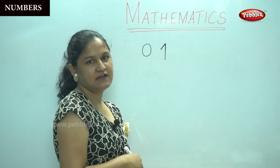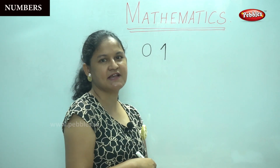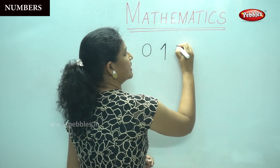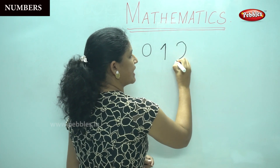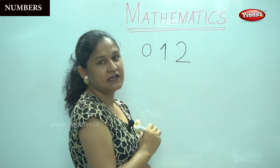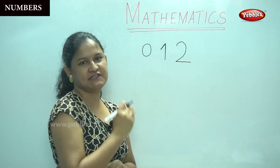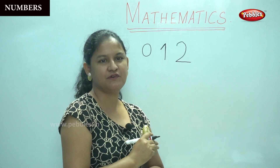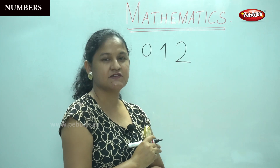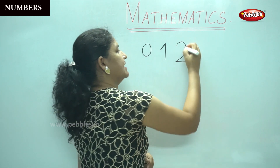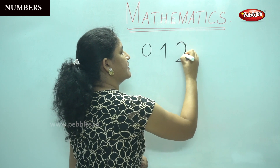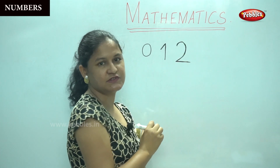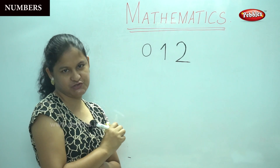Next, I will show you how to write number 2. Number 2 is a curved line and a sleeping line. If you follow this, children, it will be very simple and easy for you to write. So number 2 — how will you write? A curved line and a sleeping line. So this is number 2.